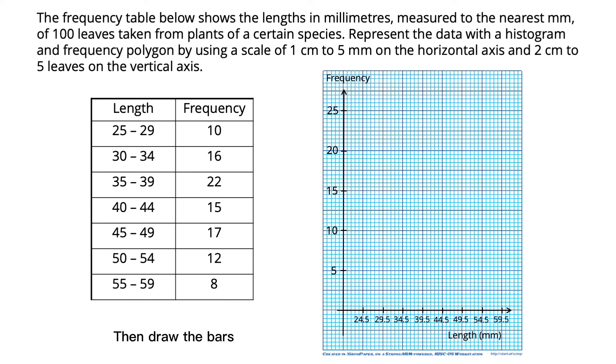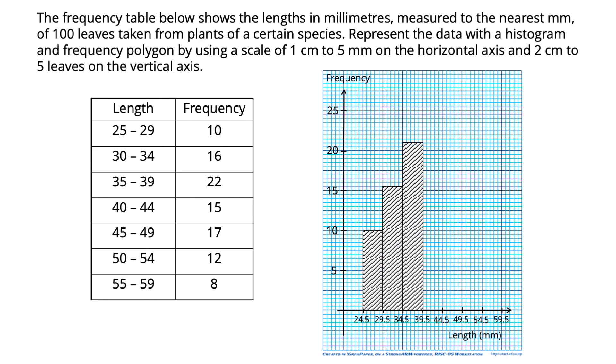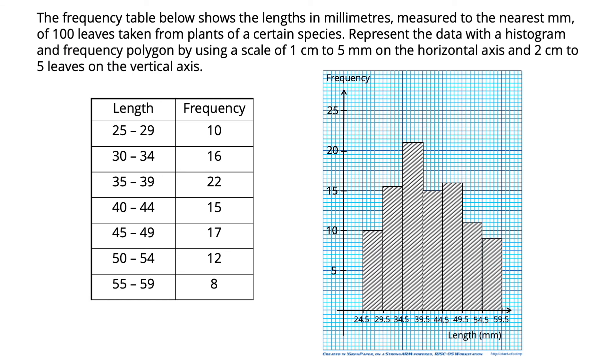Then, draw the bars corresponding to each of the given weights using the frequency: 10, 16, 22, 15, 17, 12, and 8. This is what we call the histogram with grouped data.